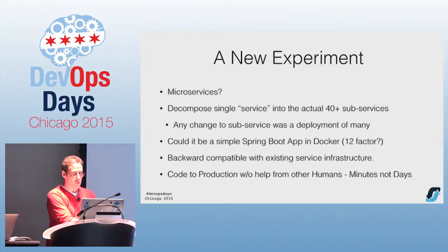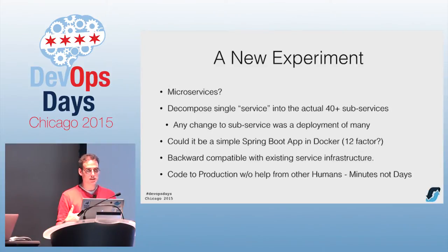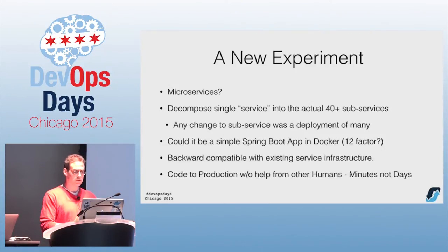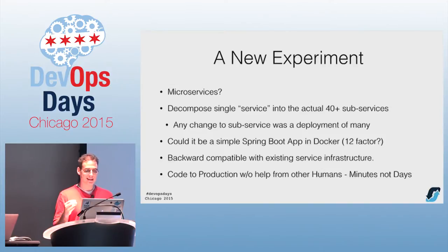One day somebody came along and said: I have one of these giant applications and I want to break it apart. I want to decompose this down into 40-plus little subservices, and I want to do it in Docker using 12-factor principles. I want simple configuration, package it all up in Docker, and the goal was to deploy this in minutes — not days.